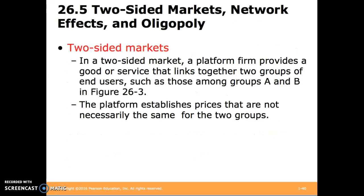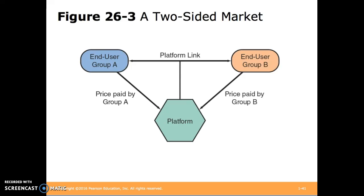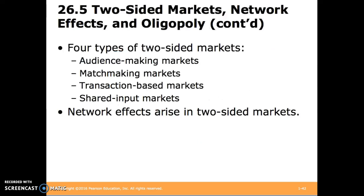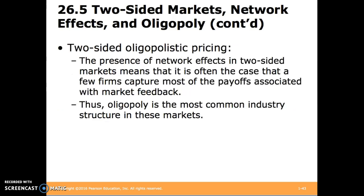In a two-sided market, a platform firm provides a good or service that links together two groups of end-users, such as those among groups A and B in Figure 26-3. The platform establishes prices that are not necessarily the same for the two groups. We can consider four types of two-sided markets: audience-making markets, matchmaking markets, transaction-based markets, and shared input markets. Network effects arise in two-sided markets, and since they are prevalent there, we often see oligopoly as the dominant structure in these types of markets.